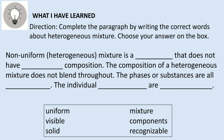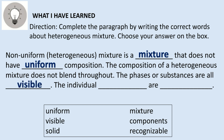Let's check your answers. Non-uniform heterogeneous mixture is a mixture that does not have uniform composition. The composition of a heterogeneous mixture does not blend throughout. The phases or substances are all visible. The individual components are recognizable. You got it correct!